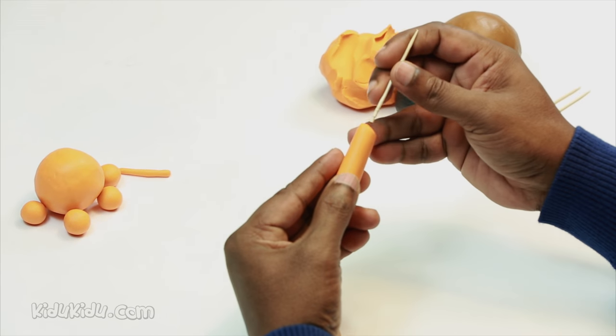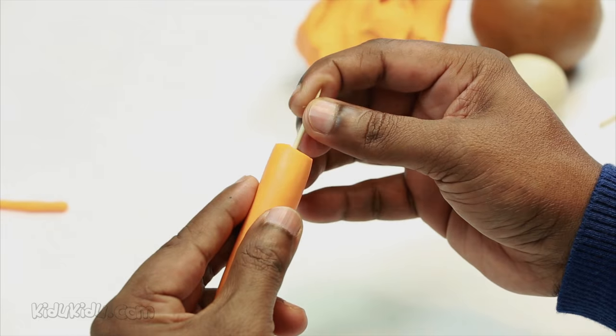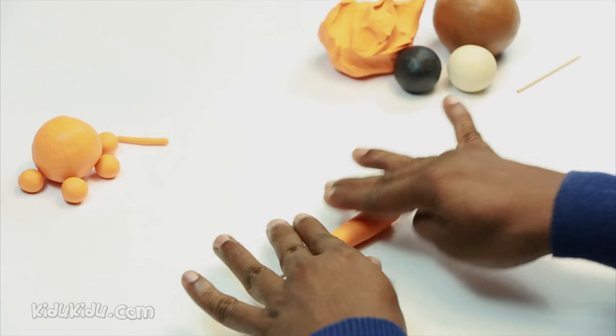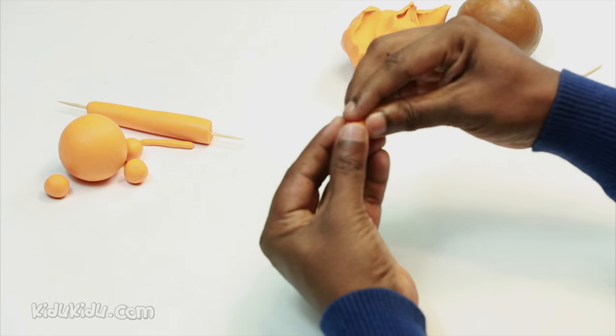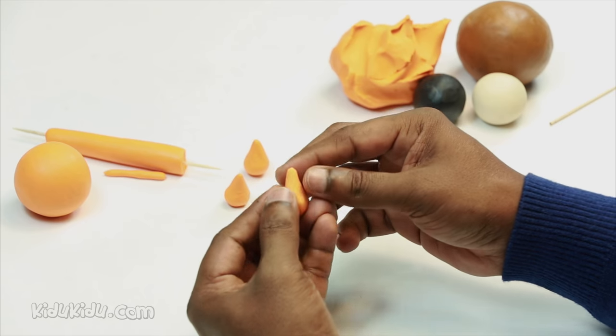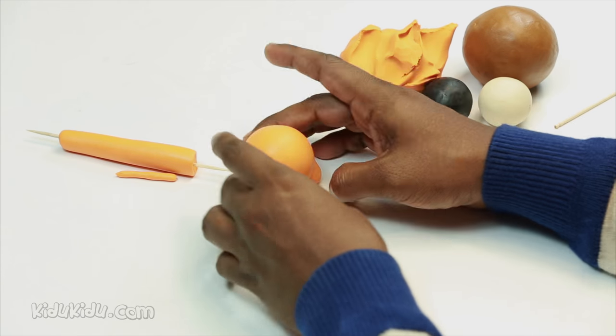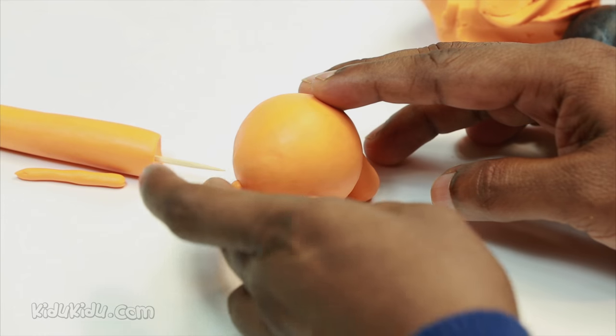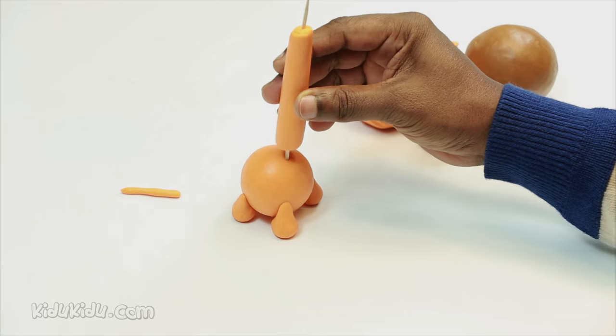Did you see how useful the toothpick is to attach the long neck to the giraffe's body? Now take the four small balls you set aside and make the feet. Set the four feet on the floor and place the body on it, and then it's time to add the neck.